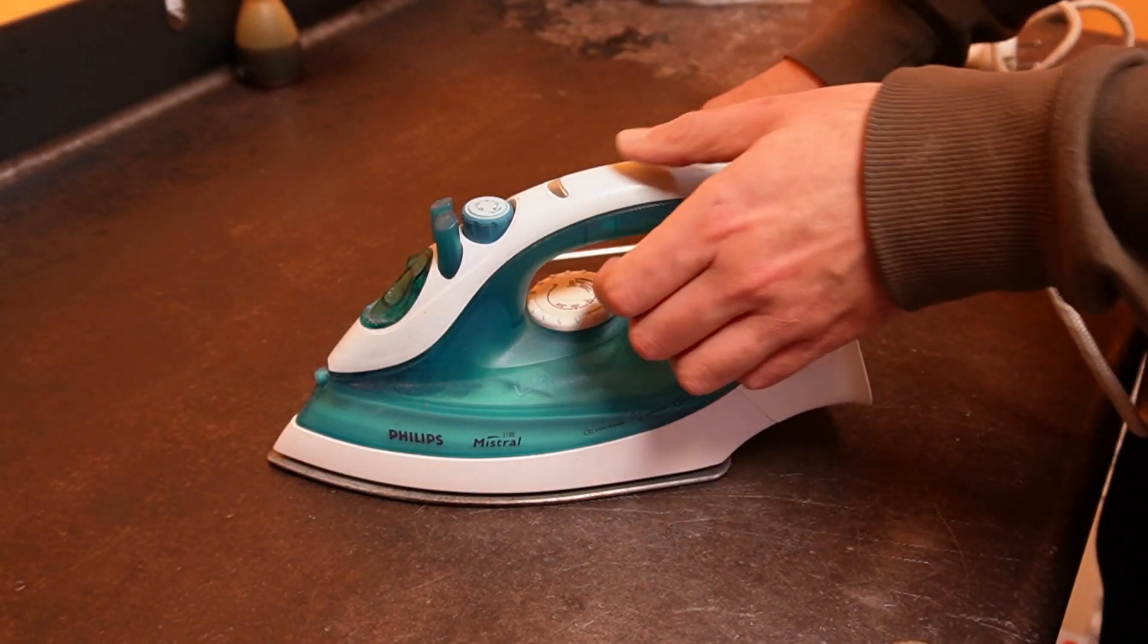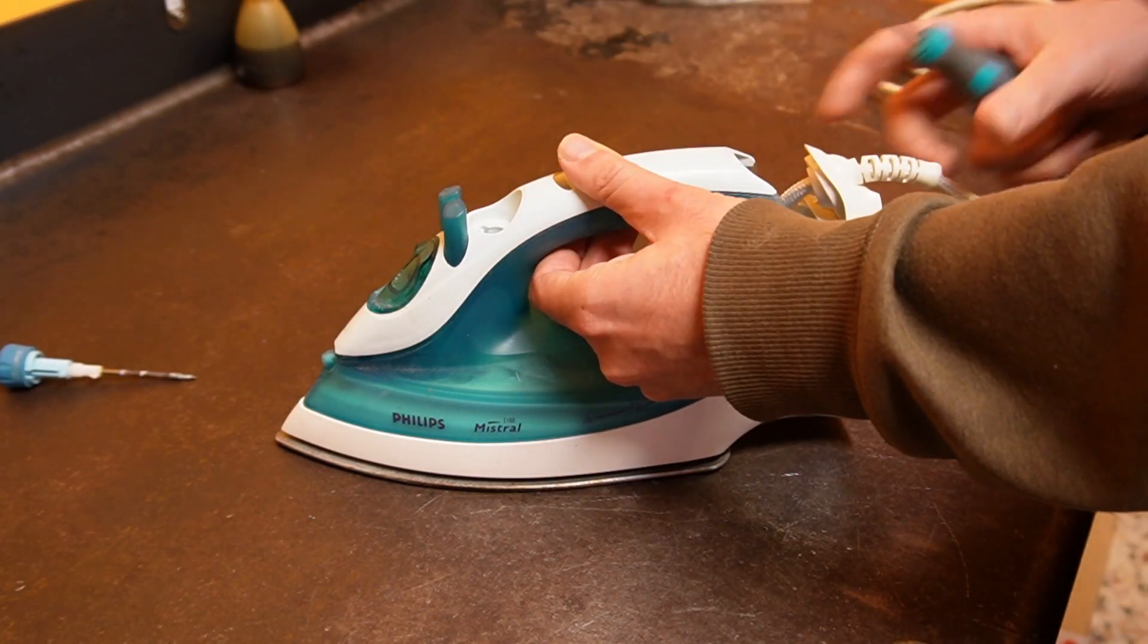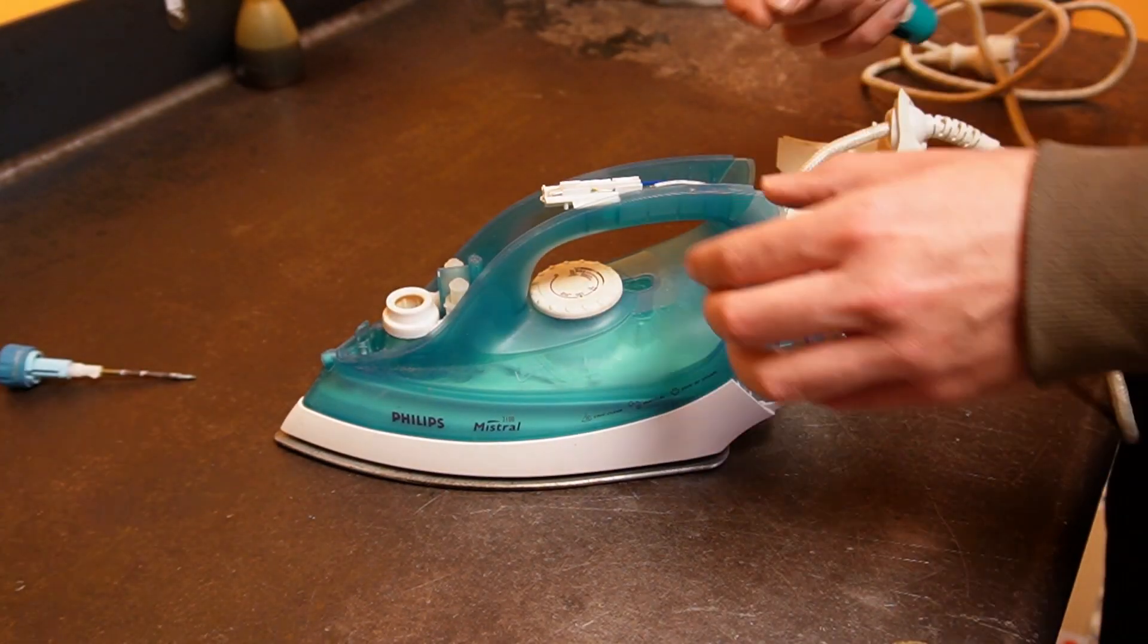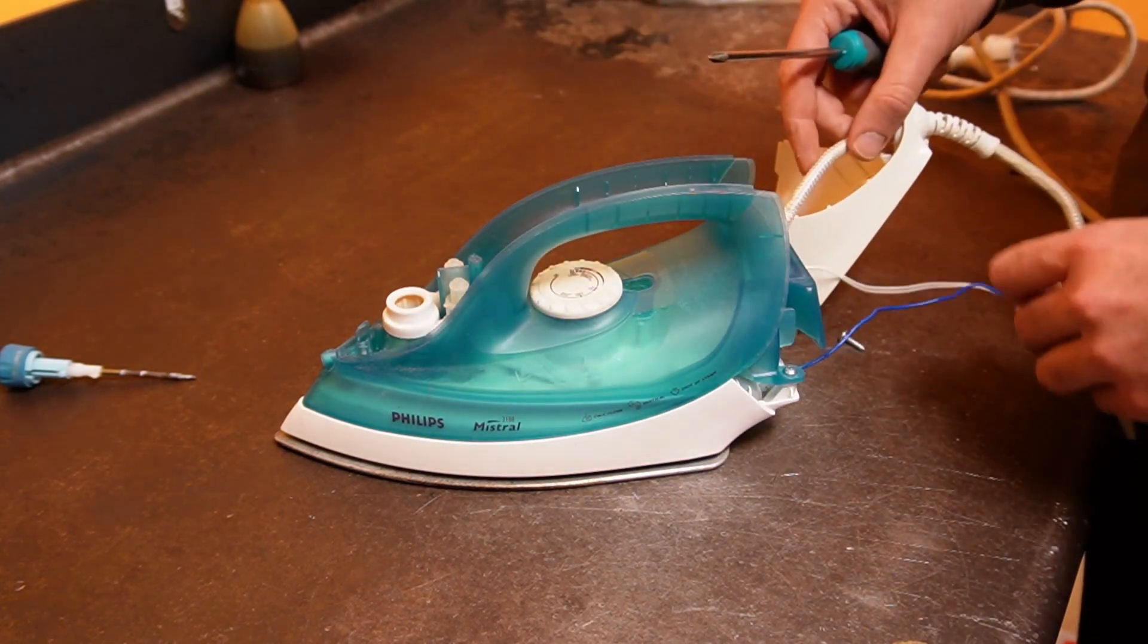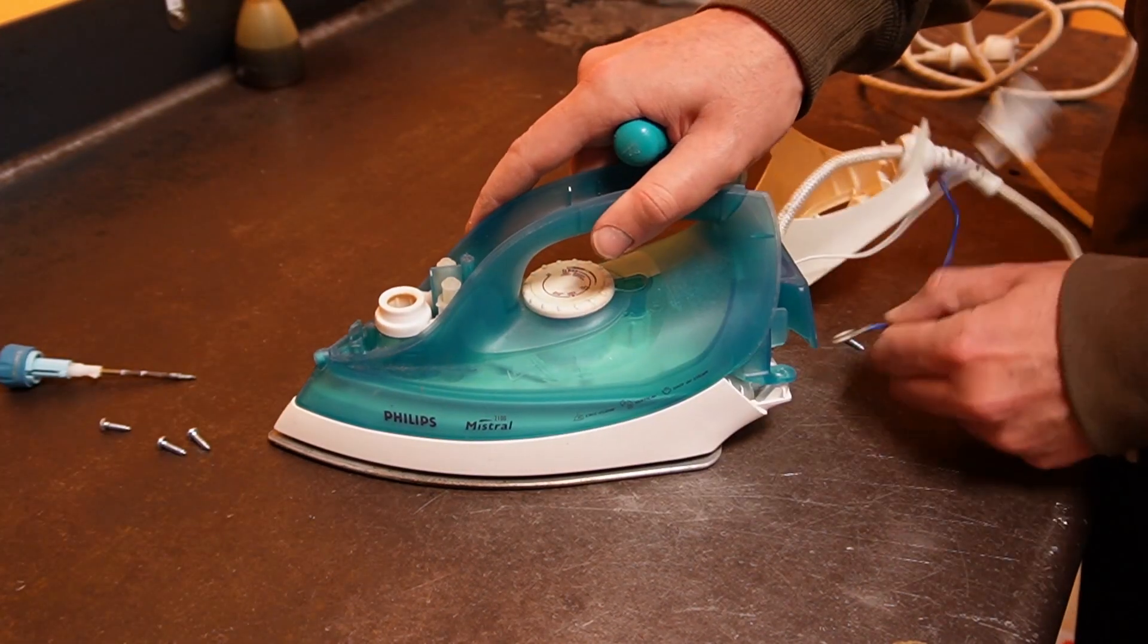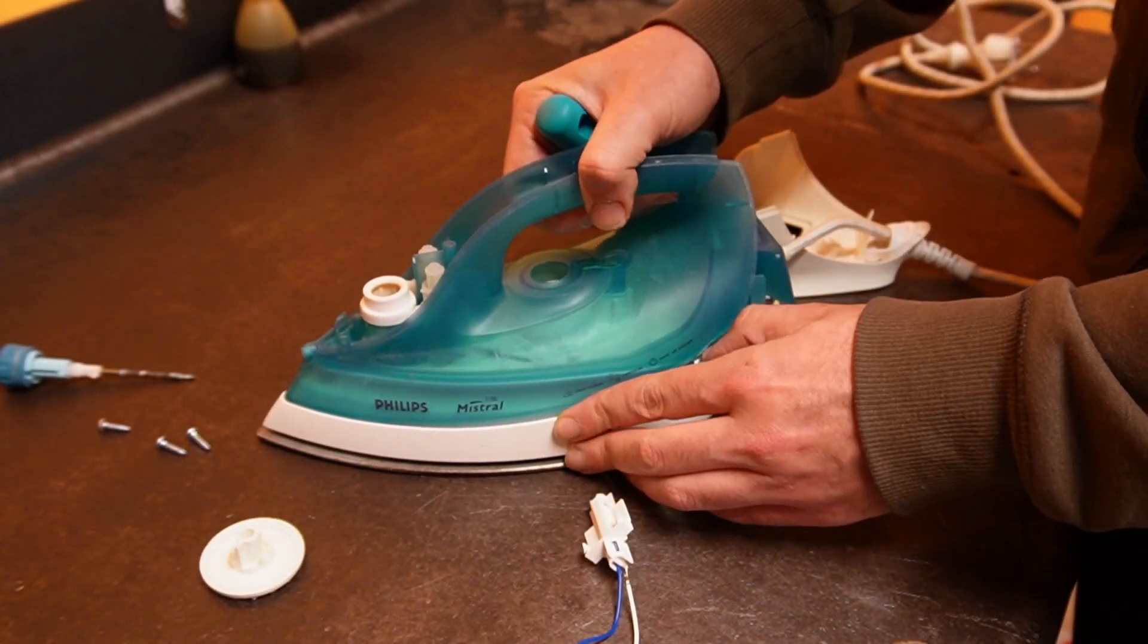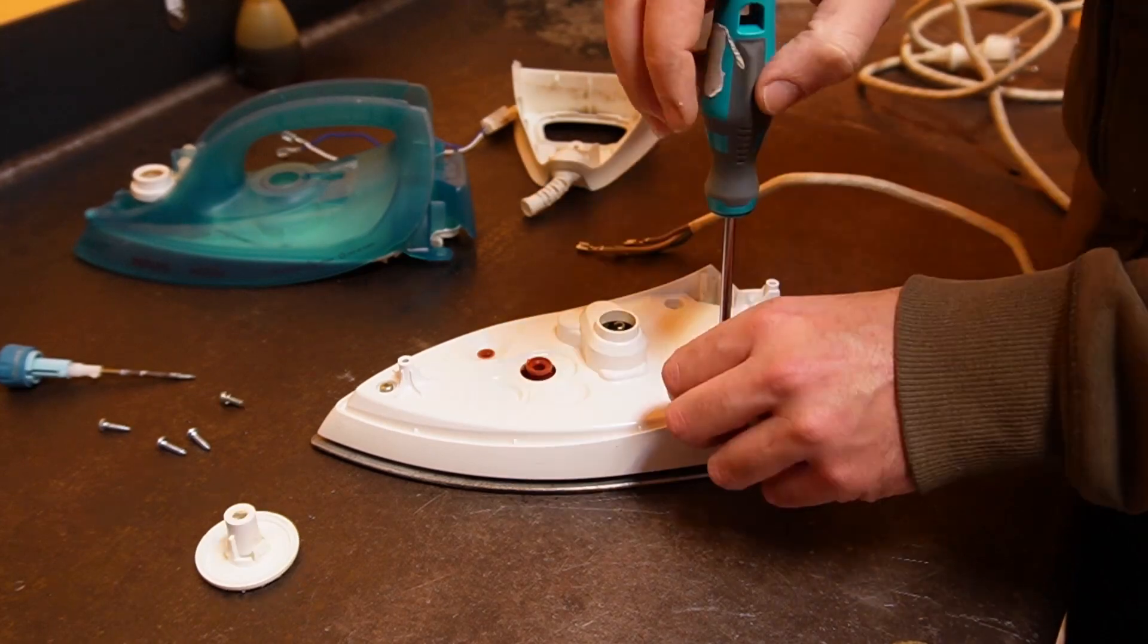First I am going to disassemble the iron. We will just need to remove some bolts to discard the components that are not necessary. In my case I decided to keep the hotplate and the protective plastic cover. This cover will be useful to limit the exposure of the heating element. Additionally, I will use the cables to make some connections.